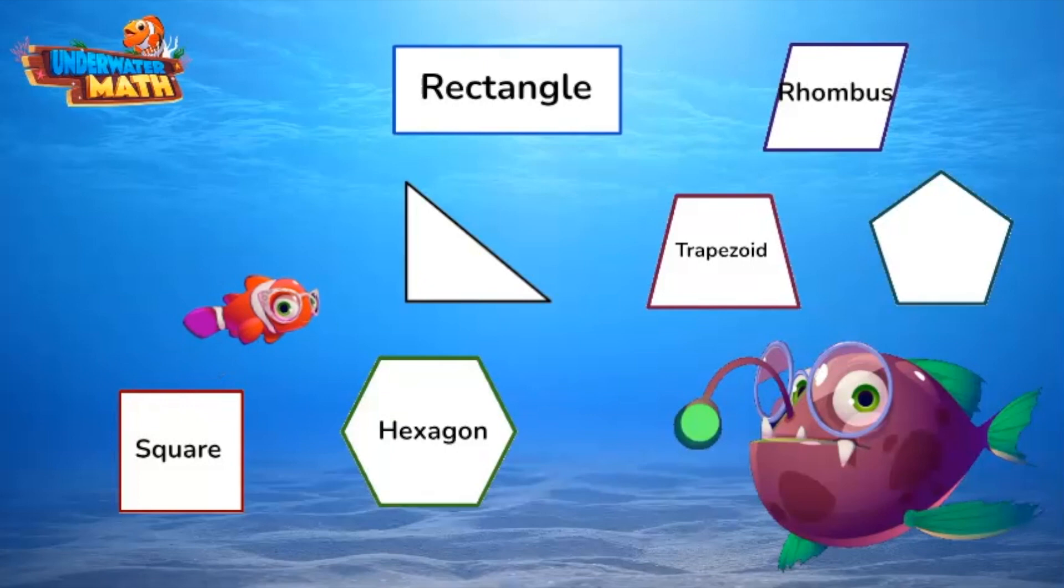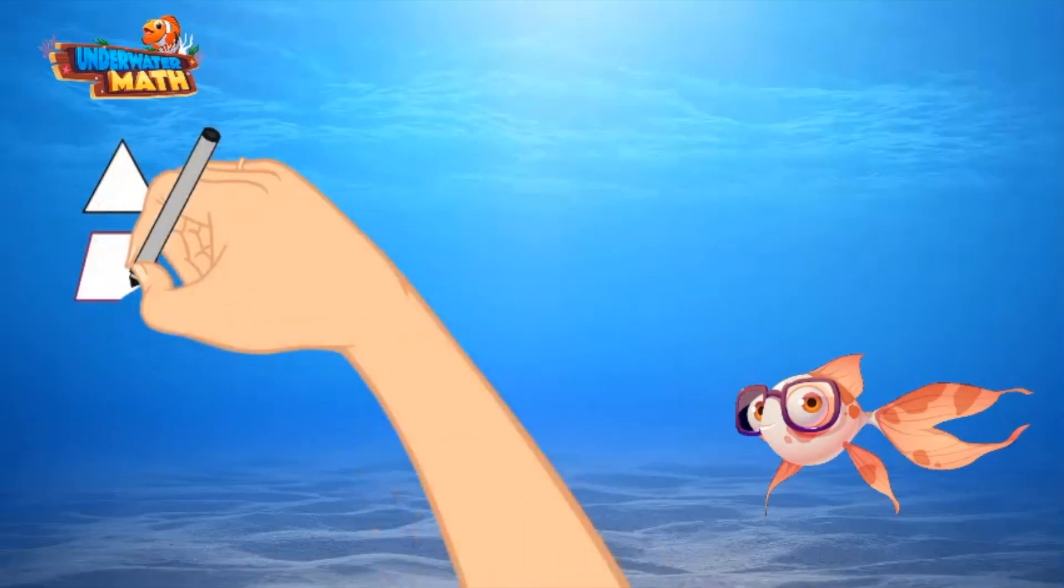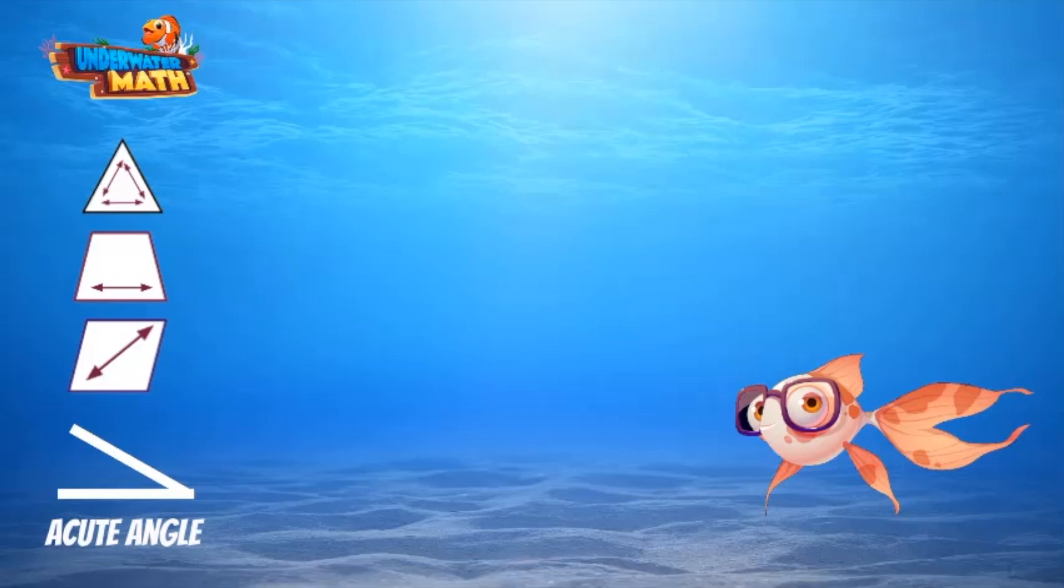Hey guys, I'm back to go over angles with you. Shapes such as acute triangles, trapezoids, and a rhombus have acute angles. Remember, acute angles are angles less than 90 degrees.